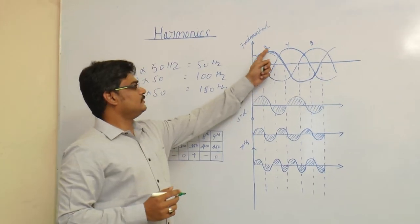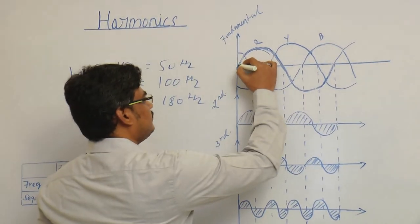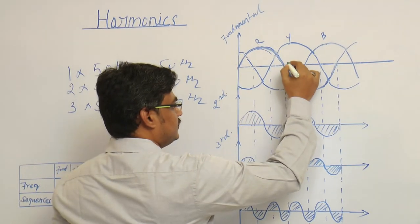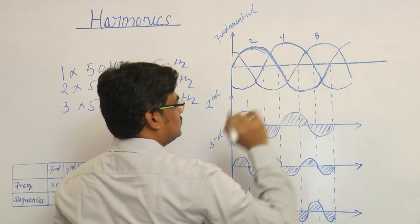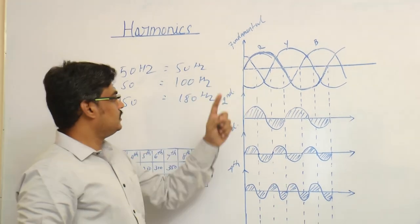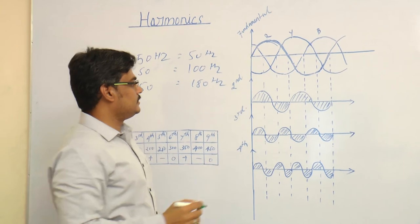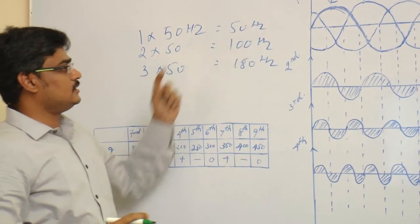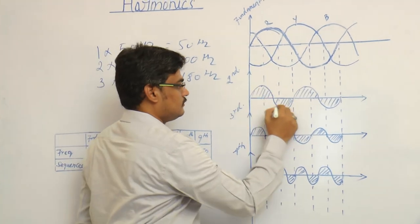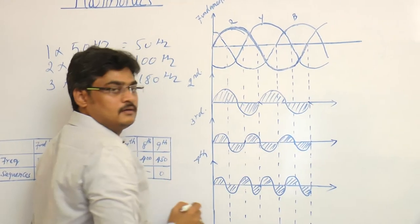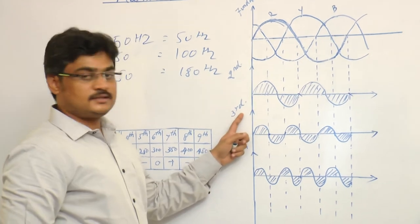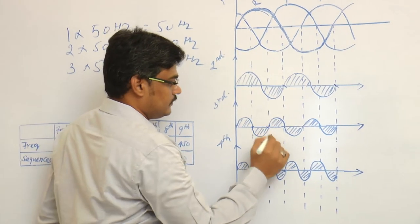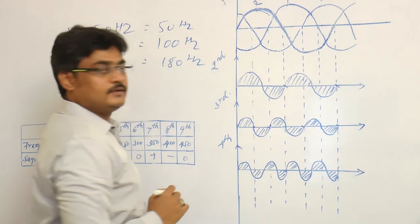Now look at the waveform. Consider the R phase. Here pi, that is 180 degrees, here 360. This is the fundamental waveform. If it is second order harmonics, that's 100 Hz. If it is third order harmonics, it's 150 Hz: 50, 50, and another 50.